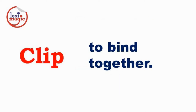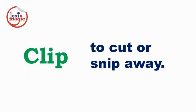Clip in the first sense is to bind together. For example, a paper clip clips sheets together. Clip in the second sense is to cut or snip away. For example, the gardener clipped the fence.